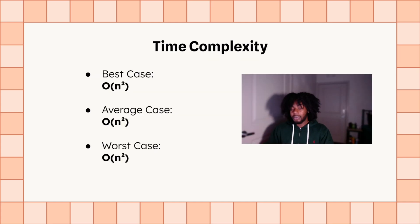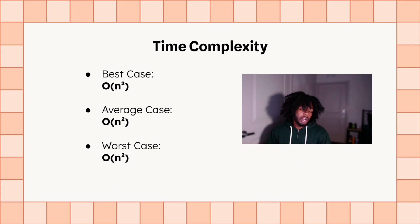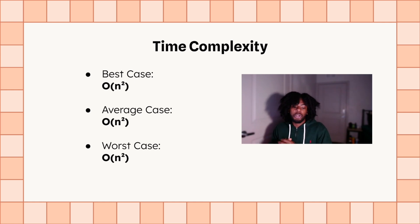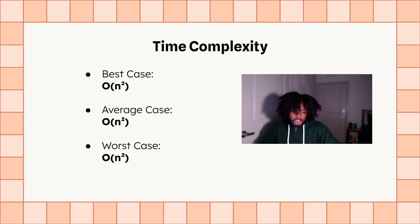The time complexity for selection sort is so easy. It's best case, average case, worst case — it's all O(N²). We get this because we use a nested for loop to implement selection sort — that's a for loop inside of a for loop. So remember that.